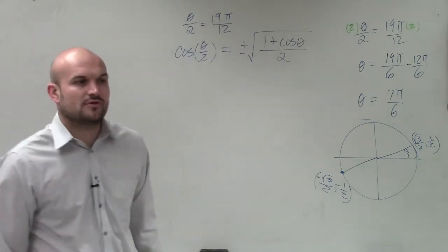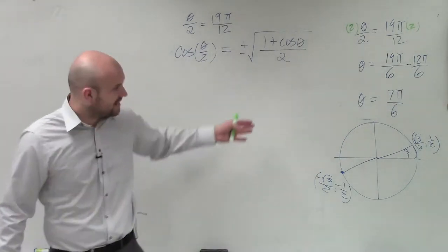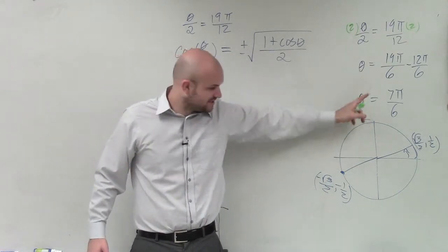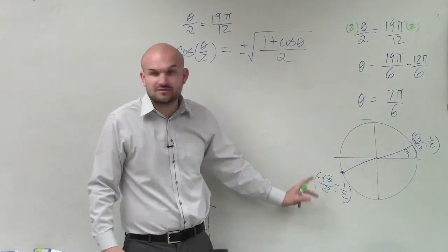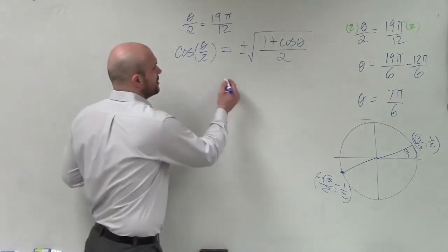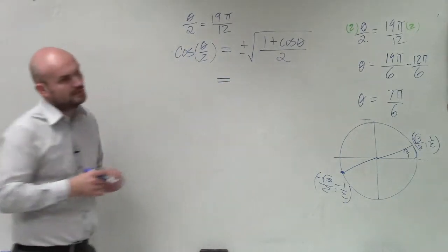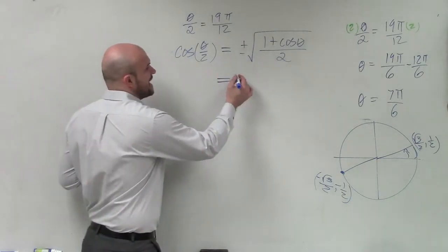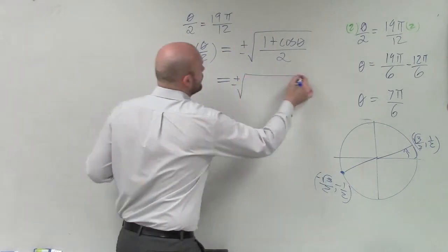So now remember, for theta, for cosine of theta, which is equivalent to 7π over 6, the cosine is the x value, which is negative square root of 3 over 2.